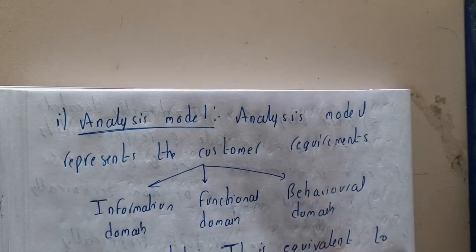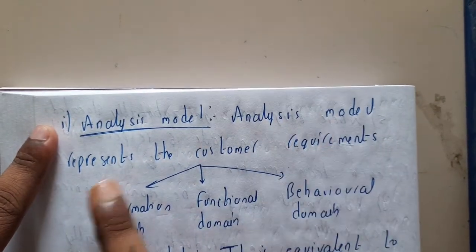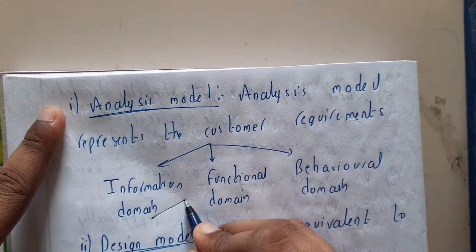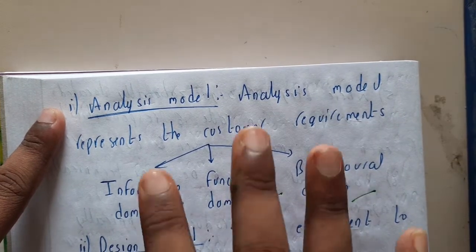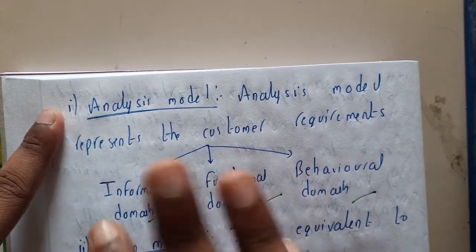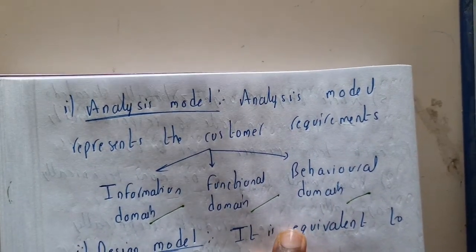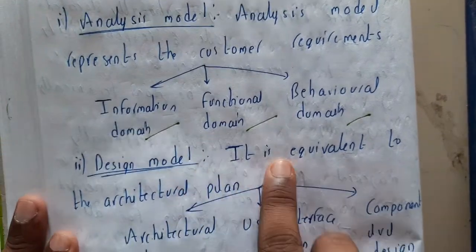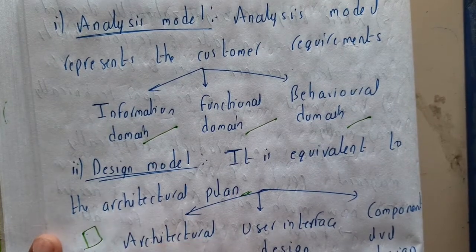The two modeling mechanisms are the analysis model and the design model. The analysis model represents the customer requirements — it represents information, functional, and behavioral aspects. We will be discussing analysis models in future lectures, like scenario-based and everything. So this is just an introduction; in this unit we will just go into the principles.